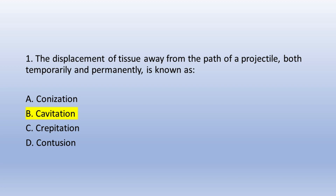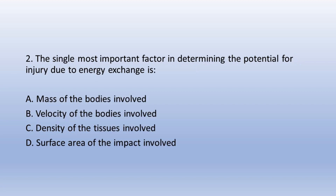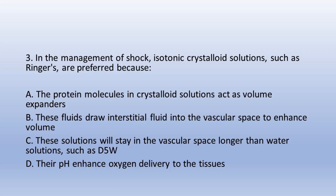Question 2. The single most important factor in determining the potential for injury due to energy exchange is: A. Mass of the bodies involved, B. Velocity of the bodies involved, C. Density of the tissues involved, D. Surface area of the impact involved. The answer is B. Velocity of the bodies involved.